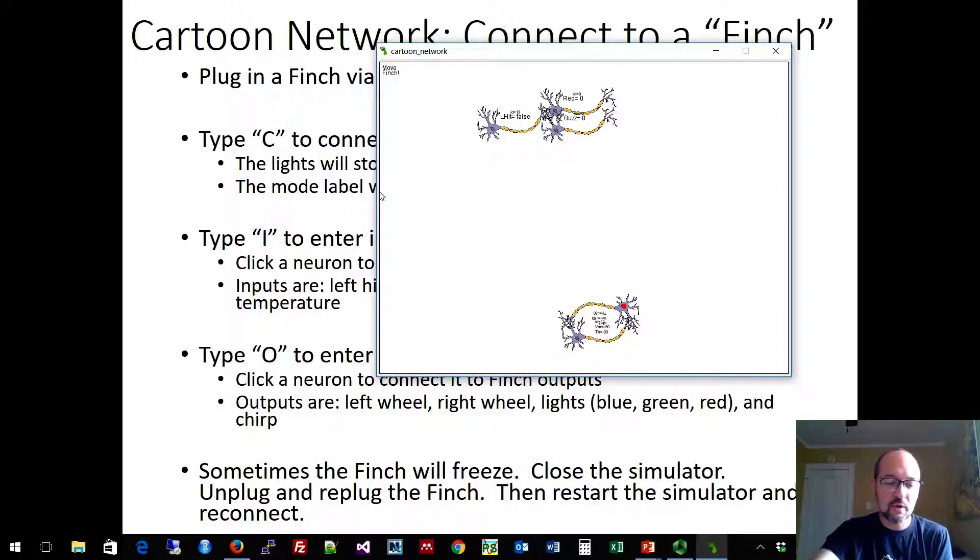The inputs for temperature and for light need some calibration, because every room is a little bit different in terms of how bright it is and how warm it is. So if we make a neuron temperature sensitive, for example,